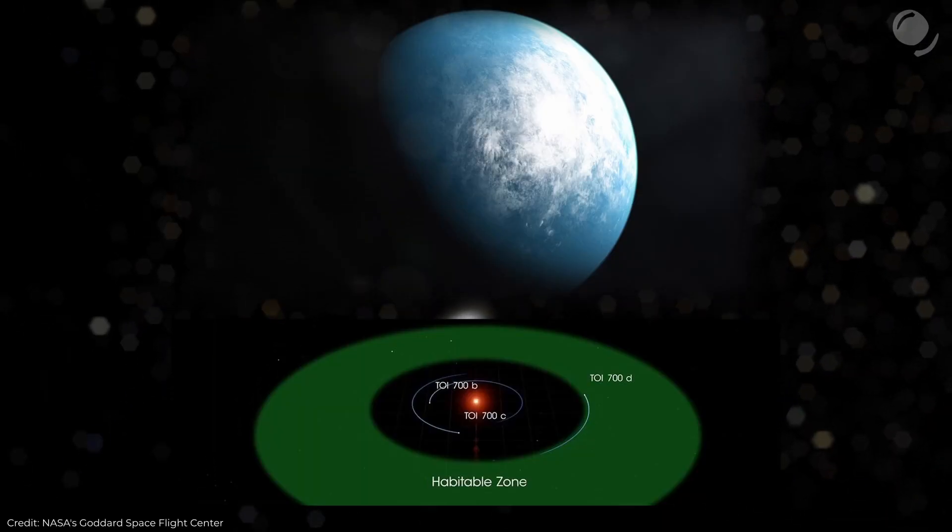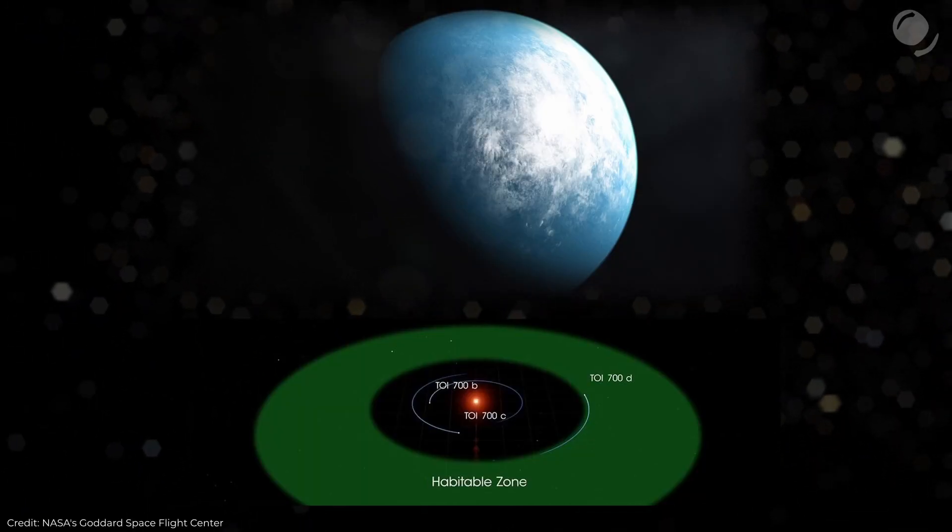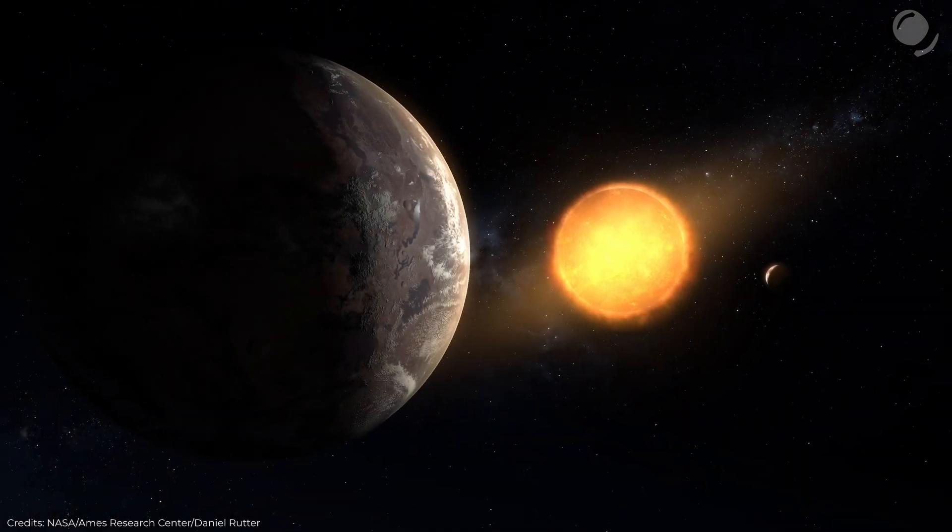But what is usually meant in those cases is that it is a rocky planet that is similar to Earth in size and it is in a so-called habitable zone and also it receives similar amount of energy from its parent star.